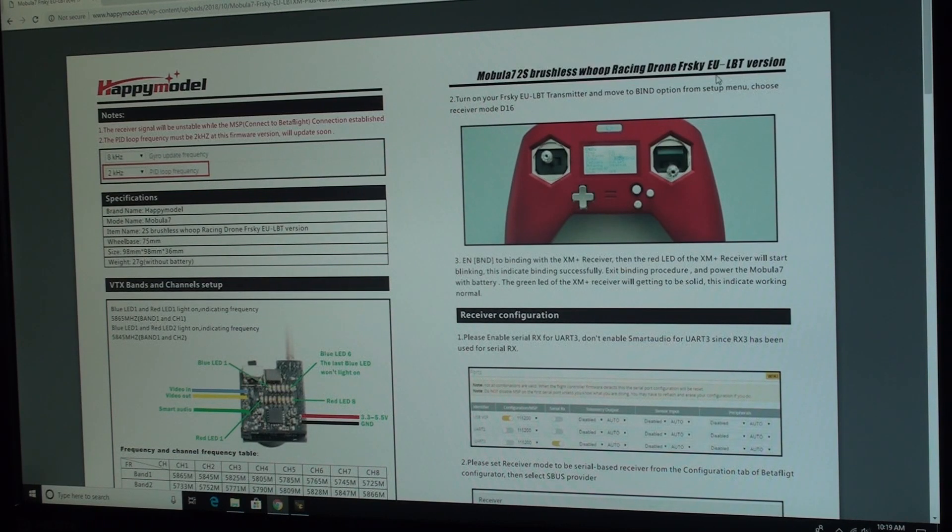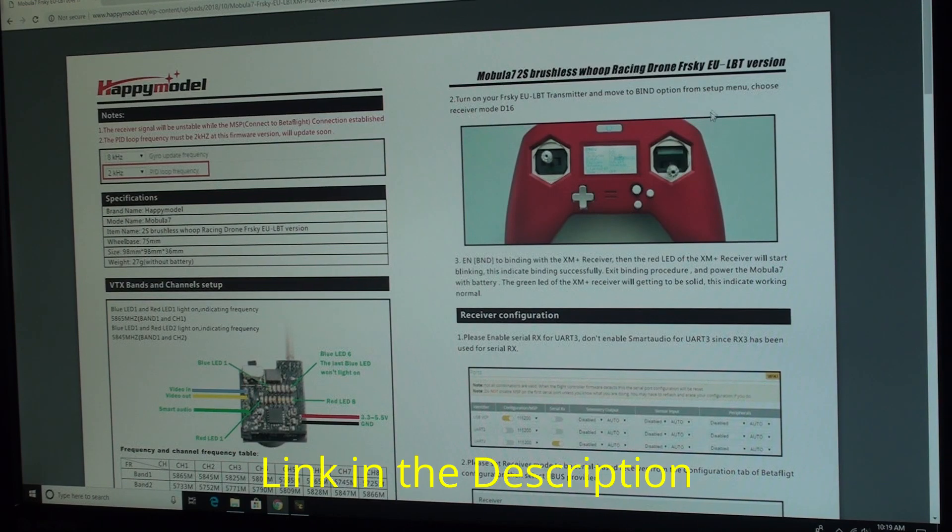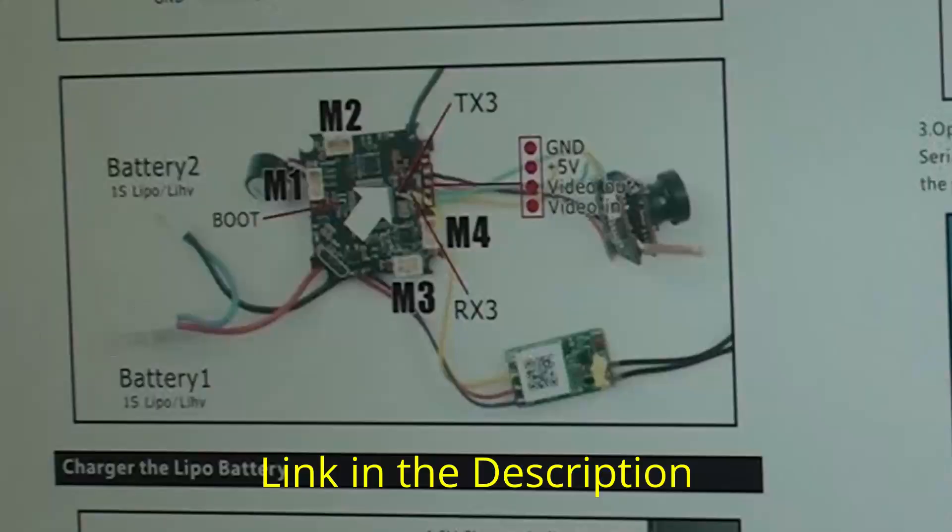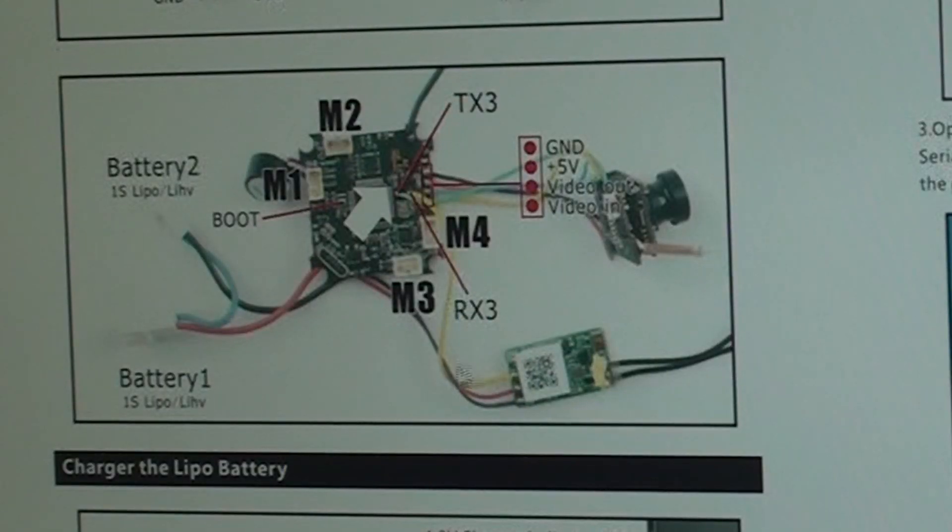Since we know it's the receiver now, I know that the EU version of the Mobula 7 has an external receiver. So I pulled up the manual for that version and scrolling down I find how they have it hooked up. So the XM plus here is going to the RX 3 pad which will be at UART 3. We'll just have to change in Betaflight and we should be able to get an XM plus working on the Mobula 7 that previously had an internal receiver working.